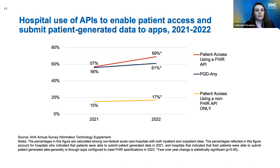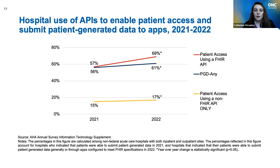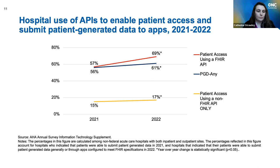Next, we look at hospital use of APIs to enable patient access, comparing hospitals using a FHIR API specifically, those using only a non-FHIR API, and hospitals enabling patients to submit patient-generated data, comparing 2021 and 2022. For 2022, two in three hospitals reported using a FHIR API to enable patient access to data through apps — a significant increase of 12 percentage points year-over-year. Patient-generated data submission and patient access using a non-FHIR API only stayed relatively level from 2021 to 2022.